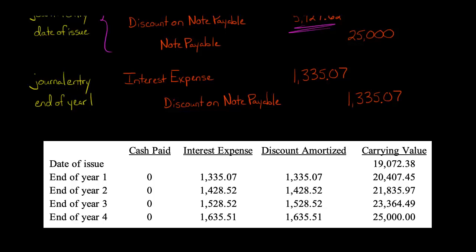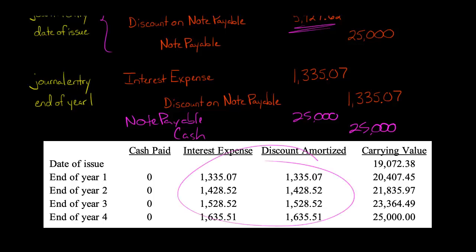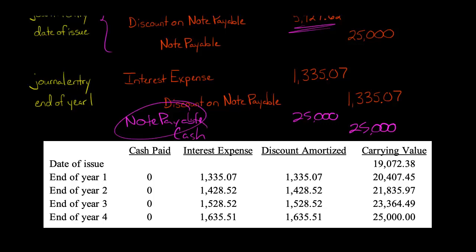Now for the final journal entry: the company repays the $25,000 it promised. They debit note payable and credit cash for $25,000. There's no entry related to the discount because those journal entries were already made along the way — the discount has been fully amortized and has gone to zero. At that point, they debit note payable and credit the cash account for the $25,000 they had initially promised to pay.